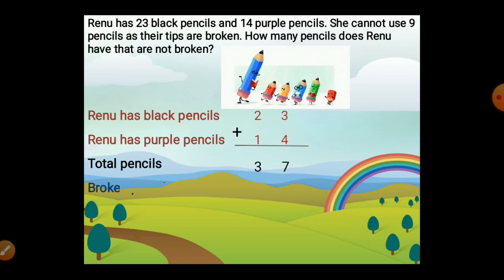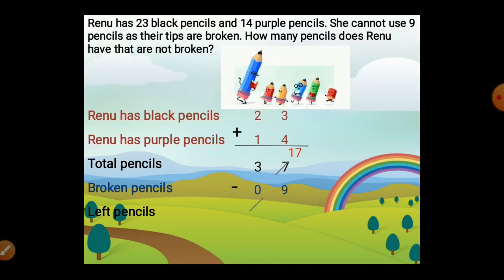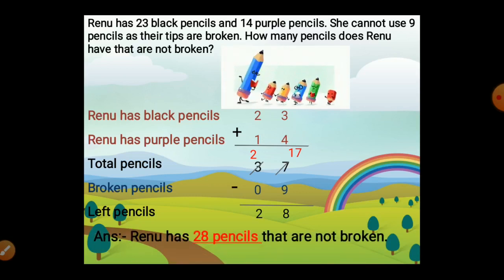Broken pencils: 9. So we are subtracting 9 from 37. 7 minus 9 — it is not possible, so you have to borrow 1 from the tens column. 7 becomes 17 and 3 becomes 2. 17 minus 9 is 8, and 2 minus 0 is 2. Our answer is 28. Reno has 28 pencils that are not broken.